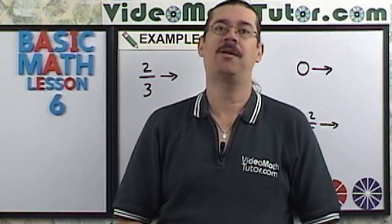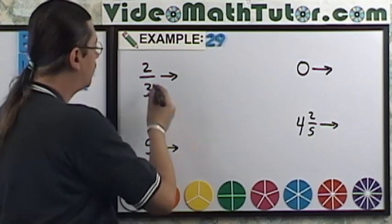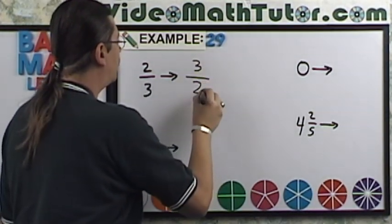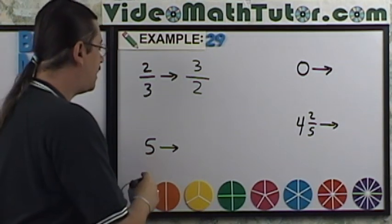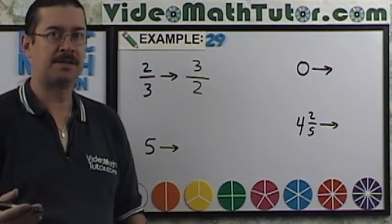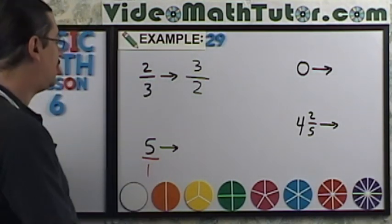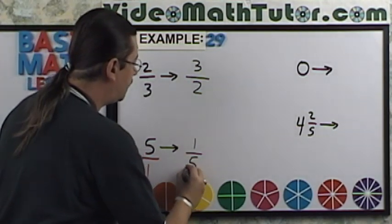For example 29, I want to find a reciprocal of a series of numbers. For the first one here, well just switch places. Put the three on top, two on the bottom. That's the reciprocal of two-thirds. Five, what's the numerator and what's the denominator? Well to make things clear, let's put this over one. Oh, so now it's obvious. Just switch it around. You're going to get one-fifth.